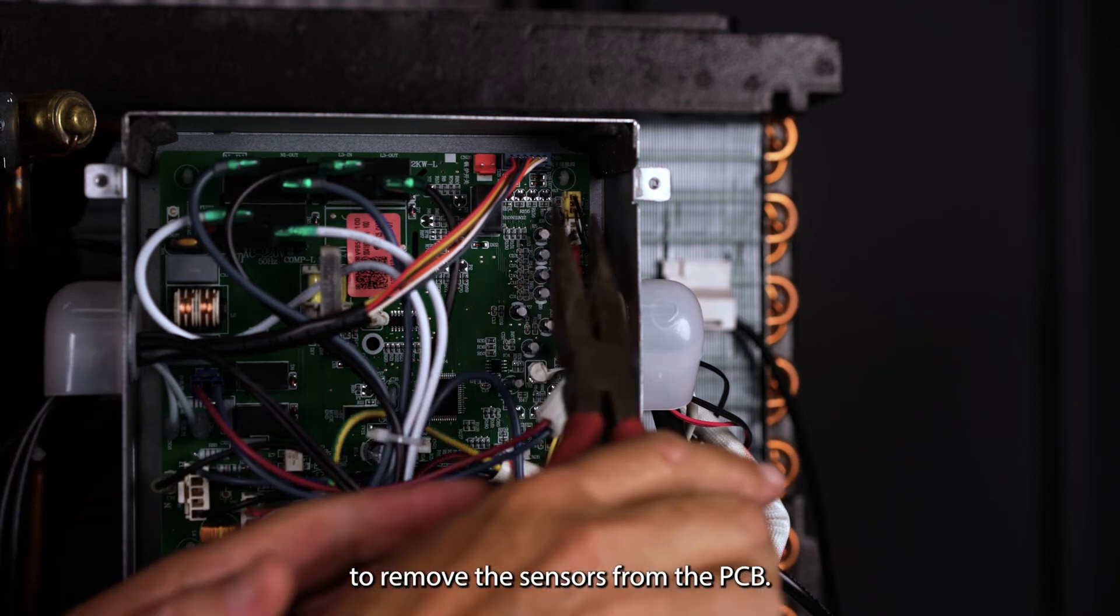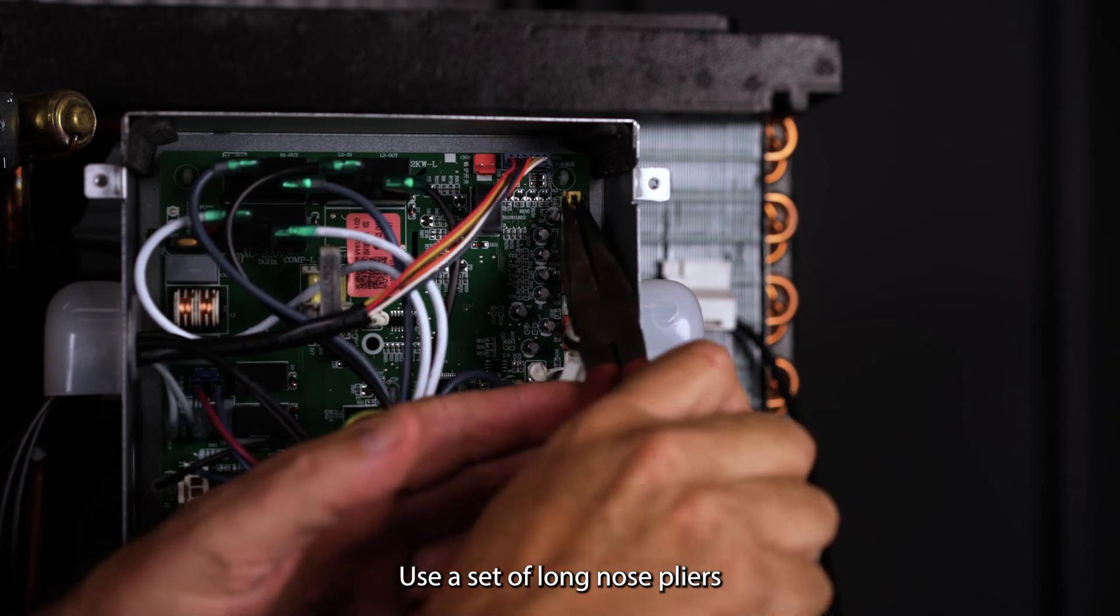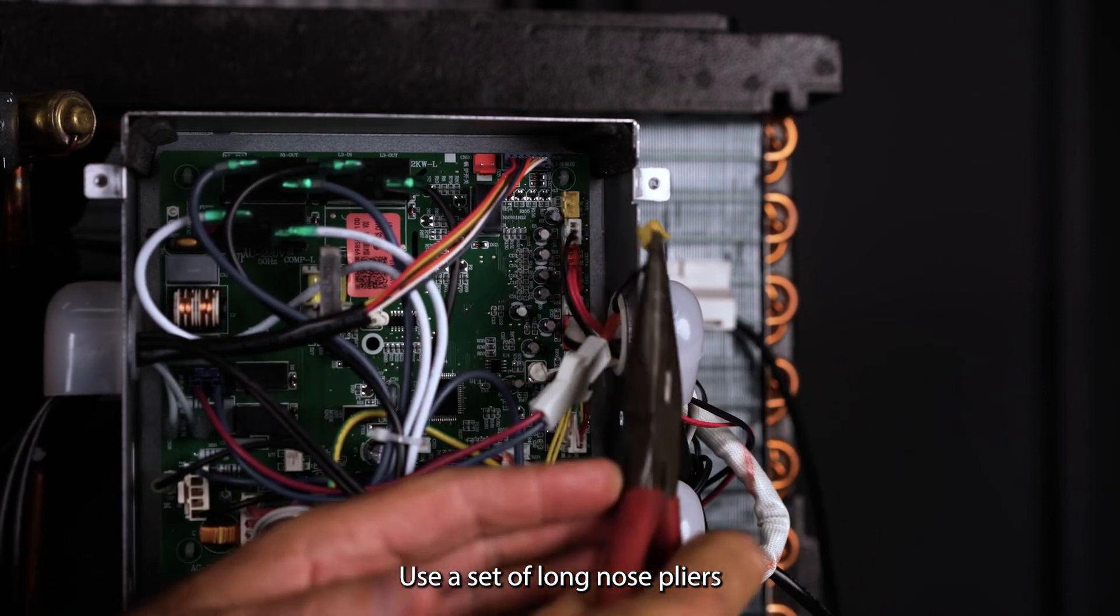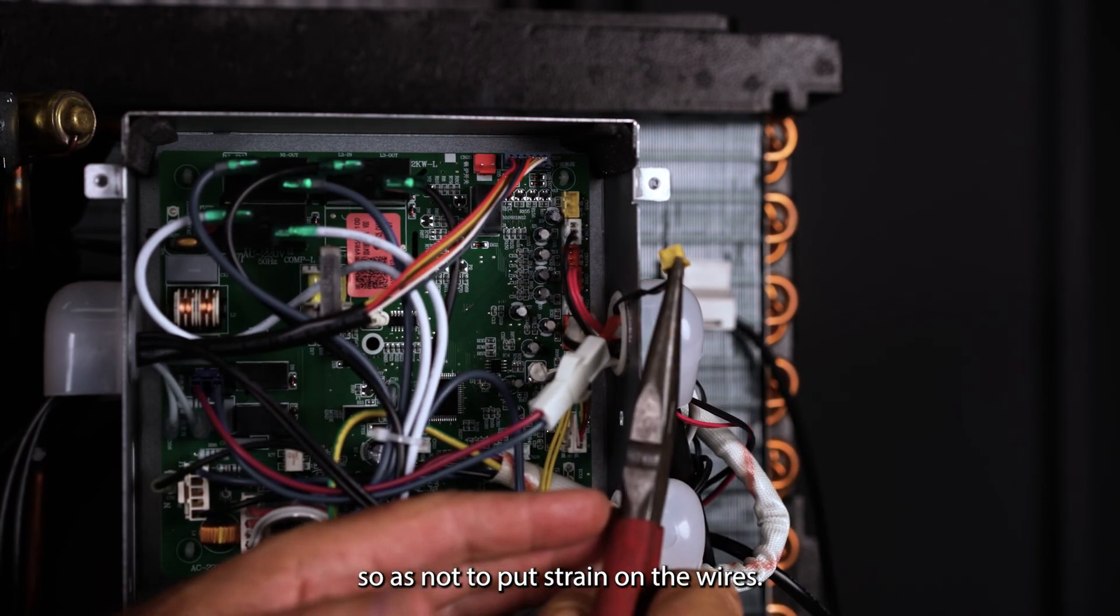To remove the sensors from the PCB, use a set of long nose pliers so as not to put strain on the wires.